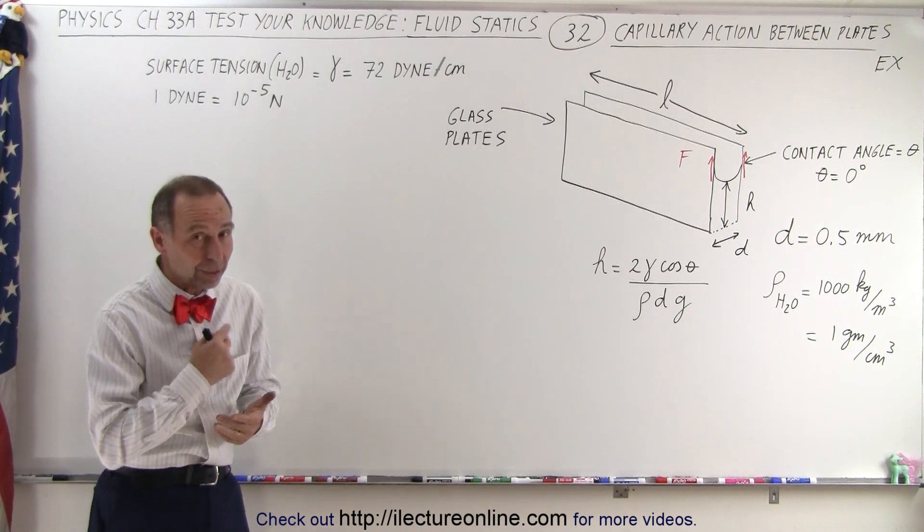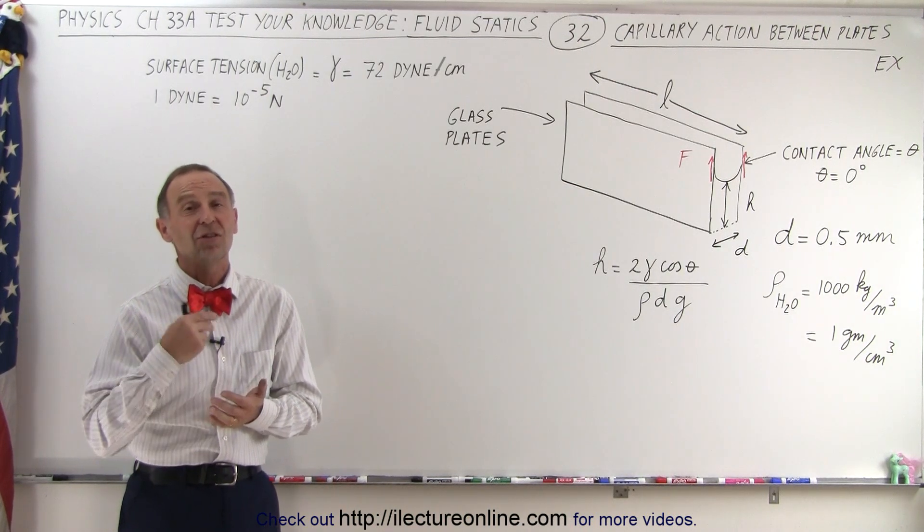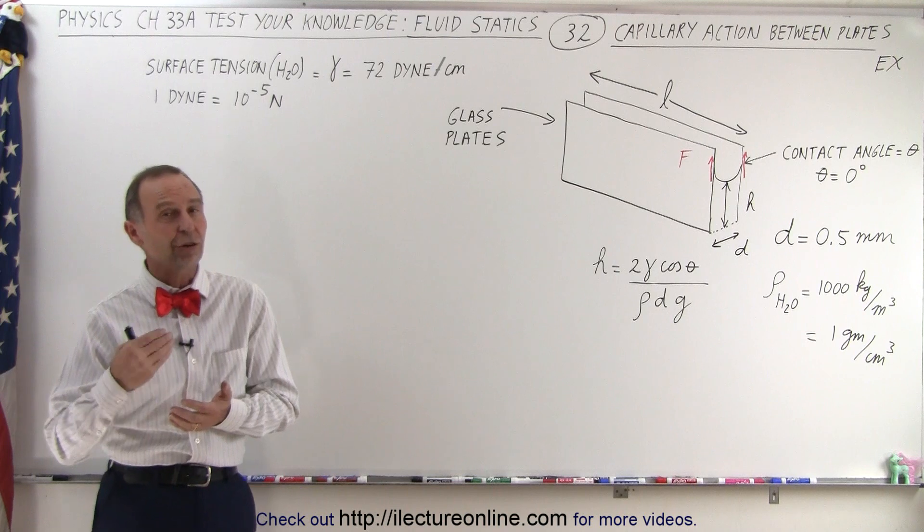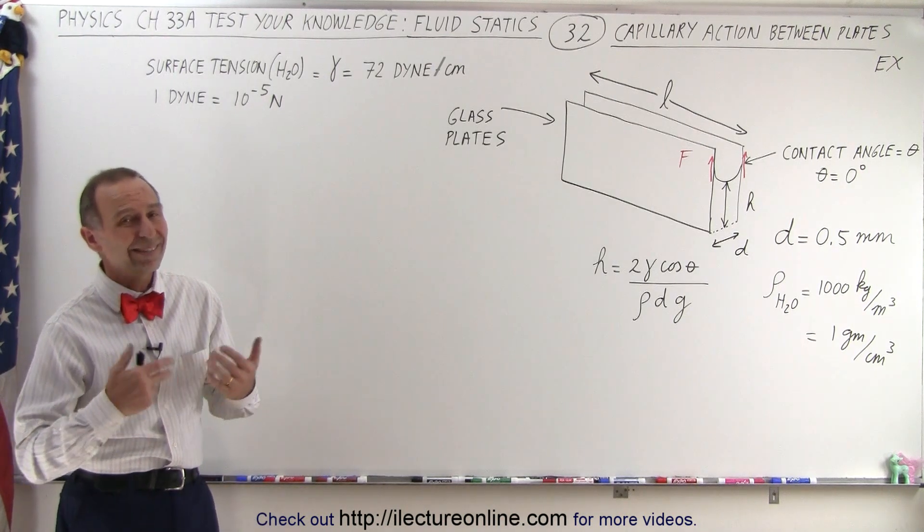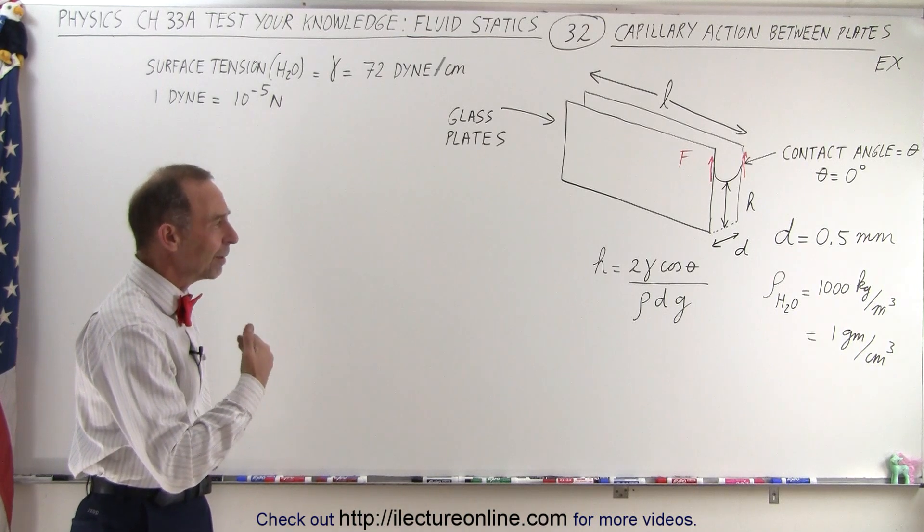Typically when we're dealing with capillary action we deal with CGS units instead of MKS units. C for centimeters, G for grams, and of course seconds is still the same in both systems. So how does that translate?